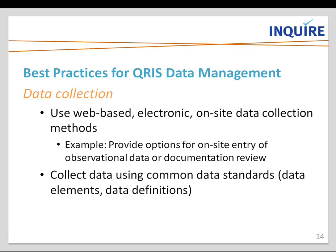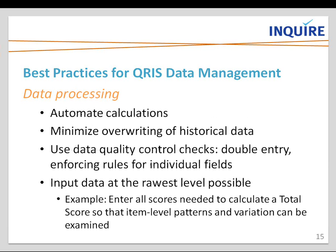Moving on to the data processing phase, the best practices we suggest are to automate calculations — for example, automatic ratings generated using indicator-level data in a QRIS data system — minimize the overwriting of historical data by preserving all past ratings and data used to create them so changes over time can be examined, use basic quality control checks like double entry or tests of data entry quality, and input data at the rawest level possible.